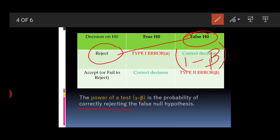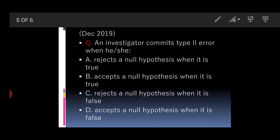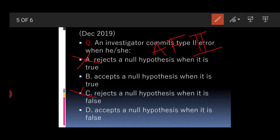Let's solve a question. An investigator commits Type 2 error when he or she: (a) rejects a null hypothesis when it is true, (b) accepts a null hypothesis when it is false, (c) accepts a null hypothesis when it is true, (d) rejects a null hypothesis when it is false. Applying the mnemonic AF2 — accepting a false null hypothesis is Type 2 error — options A and C are out. The answer is B.